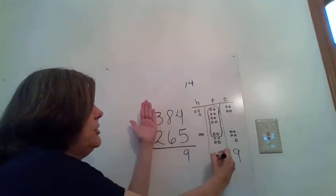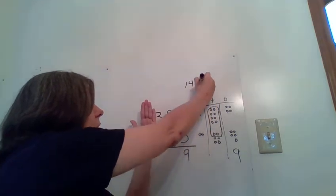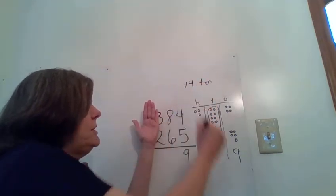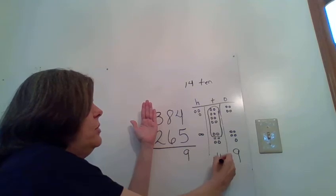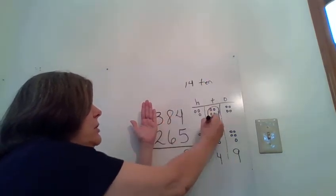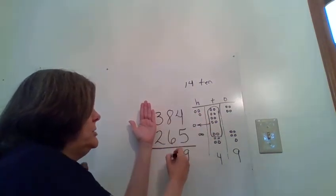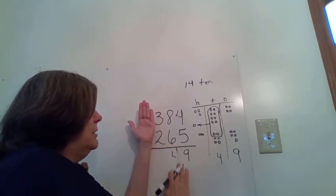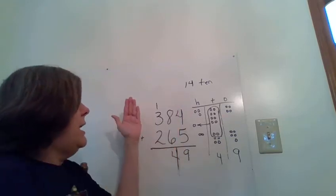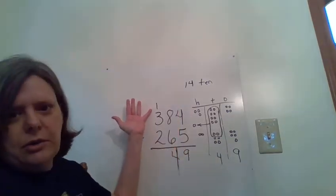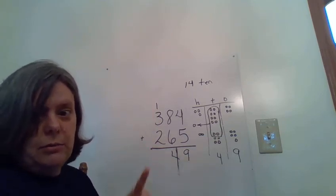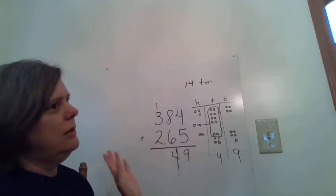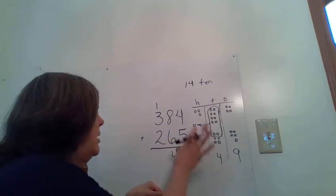So in the ones place, or tens place, excuse me, because this is fourteen tens, not fourteen ones, we're going to show that we have four tens, and then we're going to show that we created a hundred and moved it over to the hundreds place. So here's my four tens going into the tens column. And then I'm going to put my hundred that I made over here with the other hundreds so that we know we don't want to leave him behind.